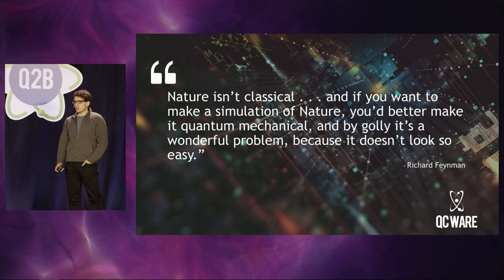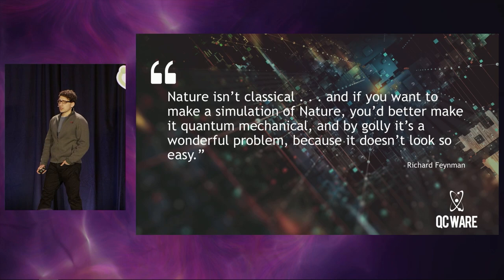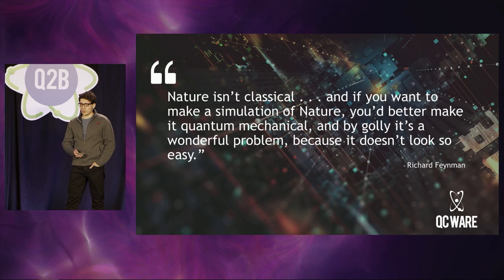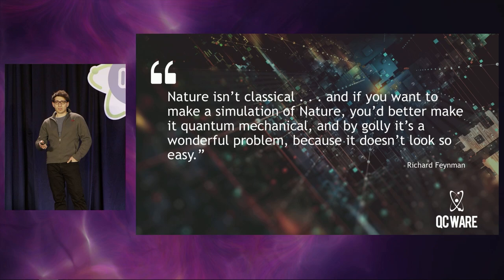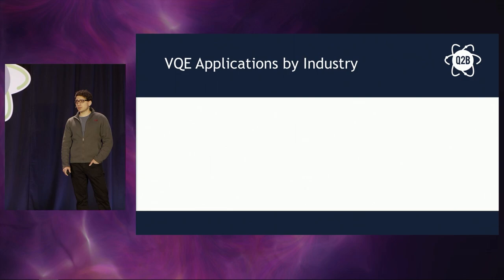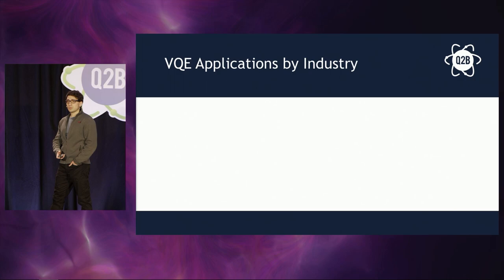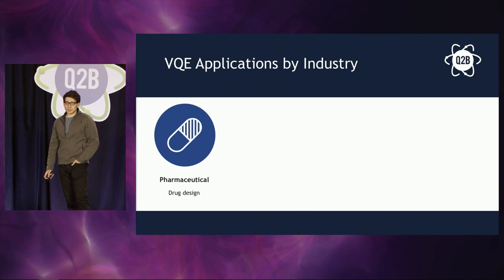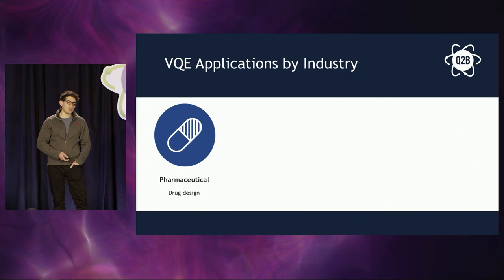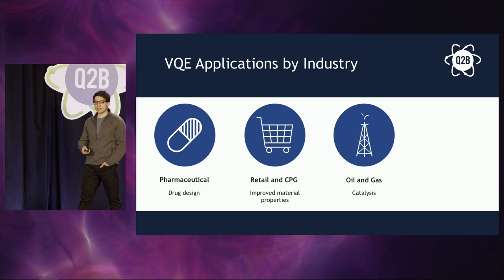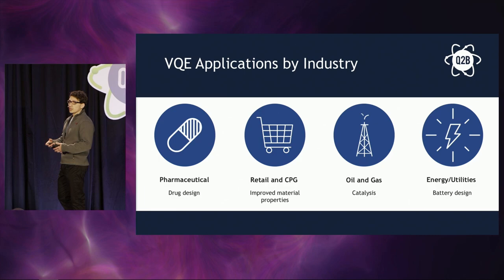Why did I bring this up when I mentioned the Variational Quantum Eigensolver? It's because the VQE algorithm is essentially one that we hope to use for quantum simulation — to simulate quantum systems that we're interested in understanding better. Simulating quantum systems is very interesting for physicists, but there are applications to industry as well. For example, the pharmaceutical industry could benefit from being able to more effectively understand properties of certain molecules, and there are numerous other applications in materials science and catalysis.